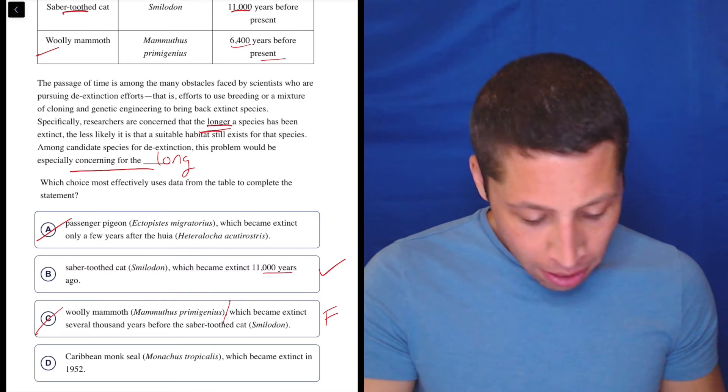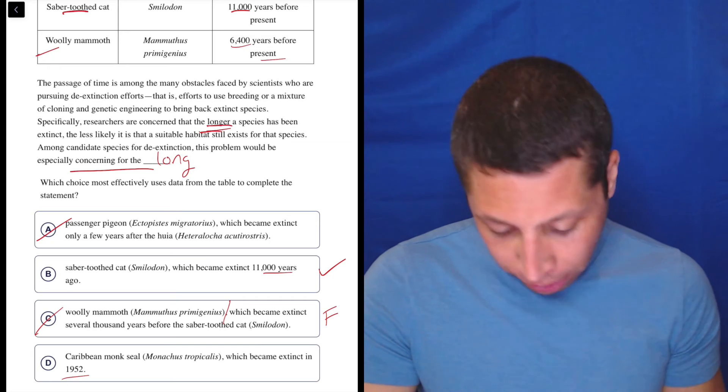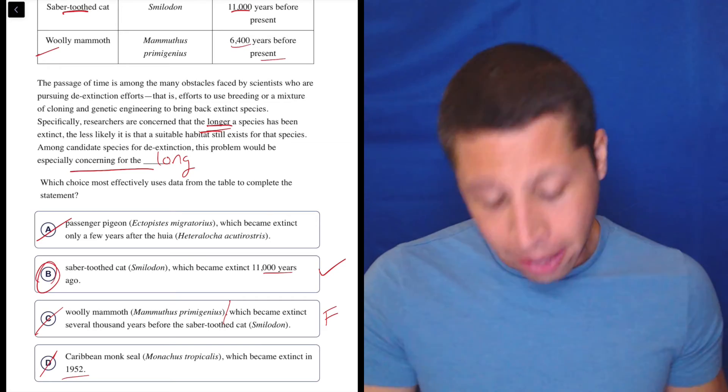D, the Caribbean monk seal, 1952 - I don't even care if that's right, it's too soon. Let's do B, that's it.